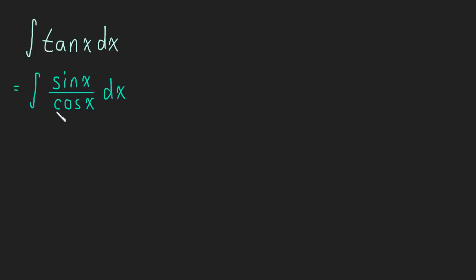On the other hand, the derivative of cos is negative sine, so we're only off by a constant. We can work with that.